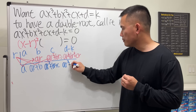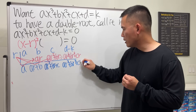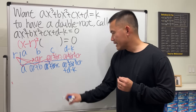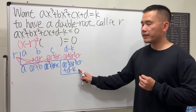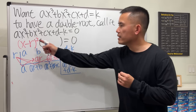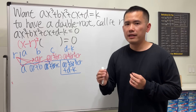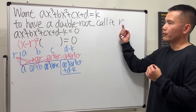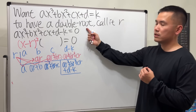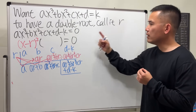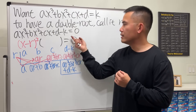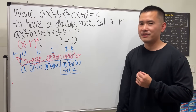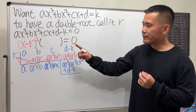Do it one more time and we get ar cubed plus br squared plus cr plus d minus k. This is the remainder when we take this expression divided by x minus r, and it should equal zero since r is a root of the original equation.